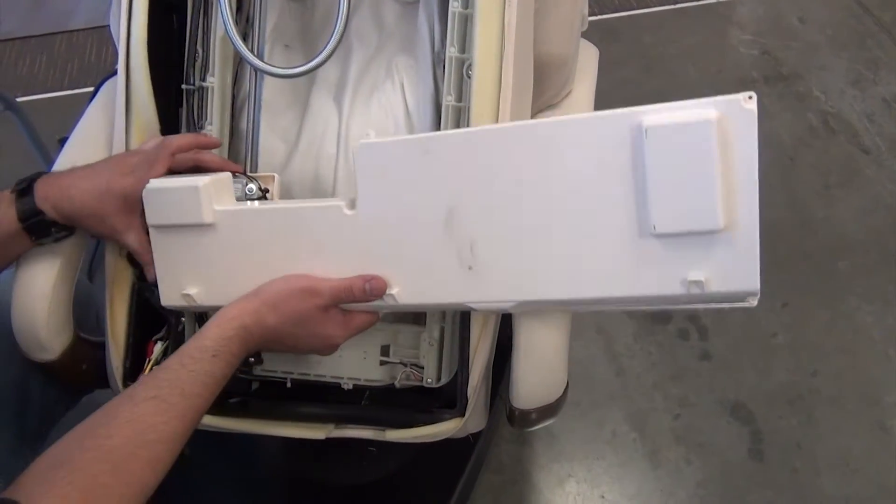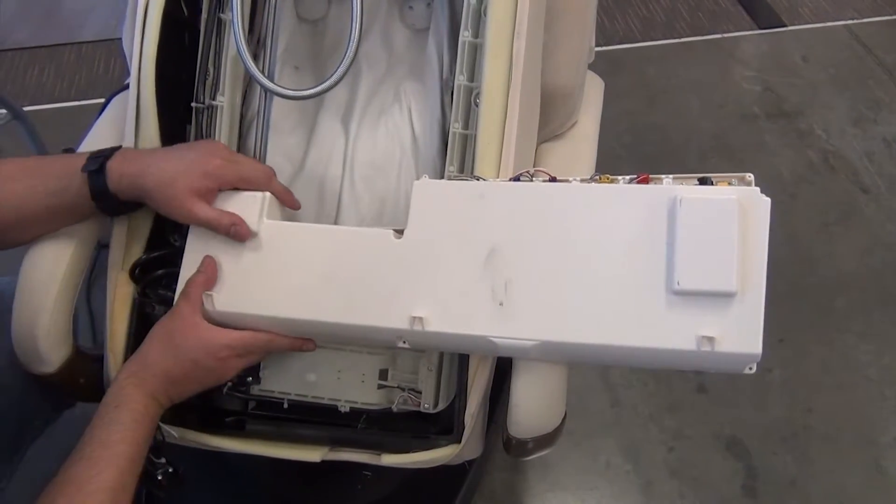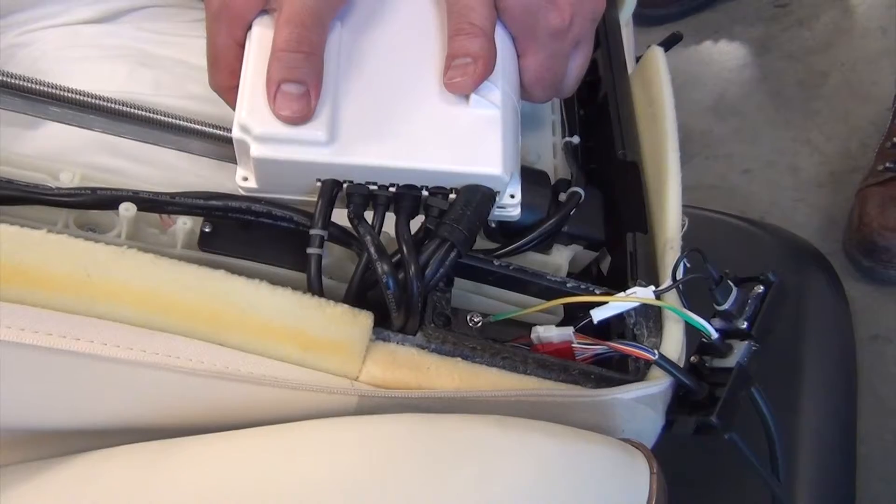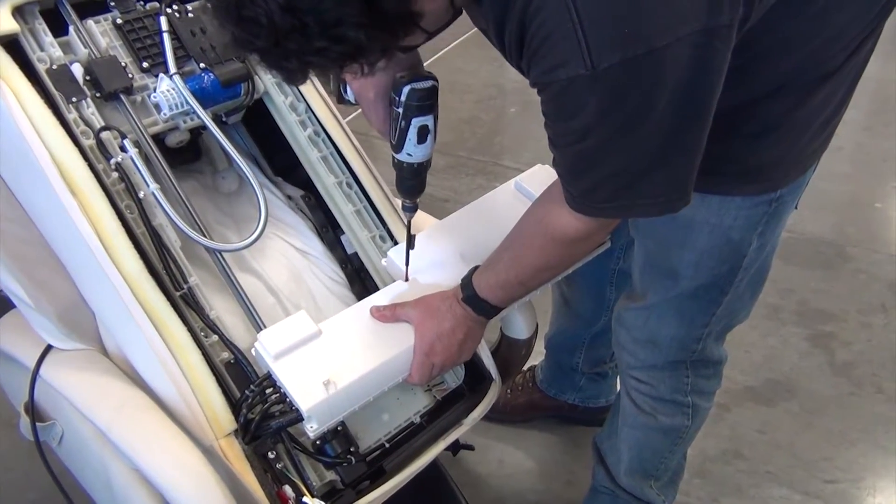Place the PCB box cover into position aligning the screw holes. Make sure there are no cables pinched between the tray and the cover. Replace the seven screws to secure the PCB box cover to the tray.